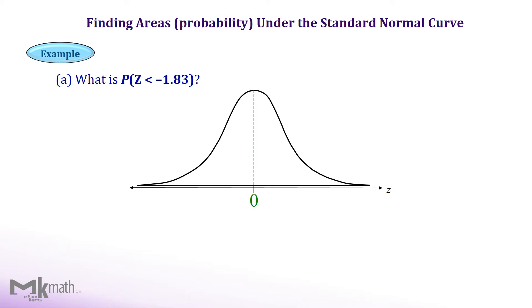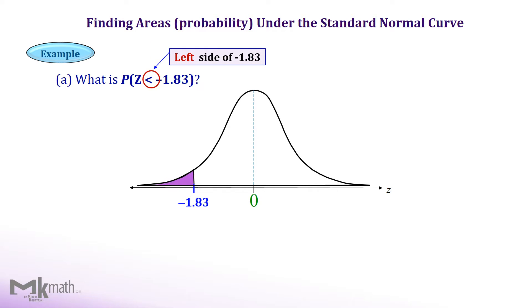Let's take a look at the first example. Mark the given z-score, minus 1.83, on the normal distribution. Mark it on the left side of the center since it is a negative value. Once we locate the z-score, then read the direction. We read it as less than minus 1.83, so we need to find the area to the left of z equal minus 1.83.